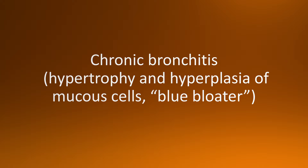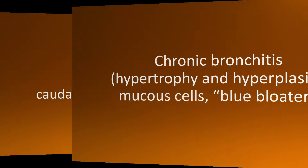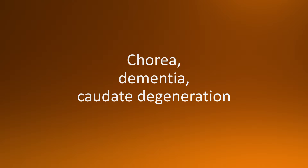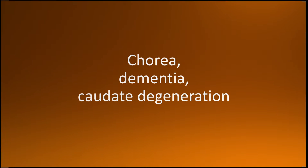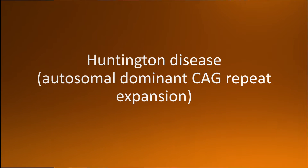Next: chorea, dementia, and caudate degeneration — the answer is Huntington's disease. This is an autosomal dominant disease caused by CAG repeat expansions.